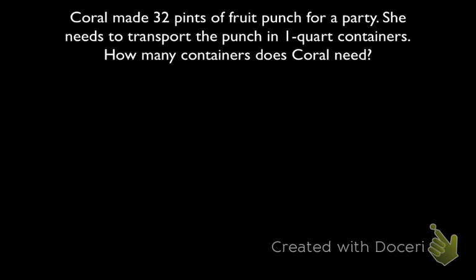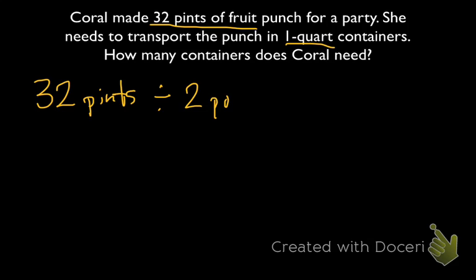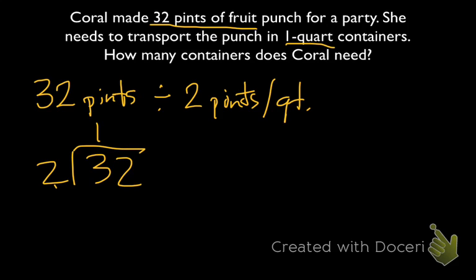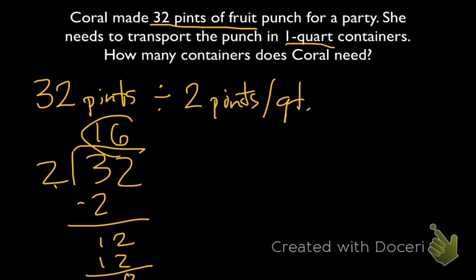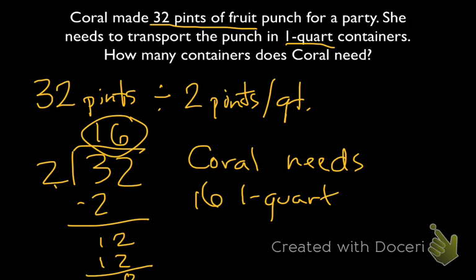To start out, we'll underline the important information: we have 32 pints of fruit punch, and we need to transport it into 1-quart containers. Our equation will be 32 pints divided by 2, since there are 2 pints in 1 quart. 2 goes into 3 once, bring down the 2, 2 goes into 12 six times, remainder 0. So Coral needs 16 one-quart containers.